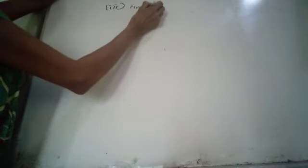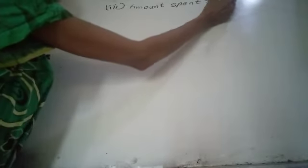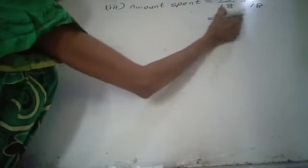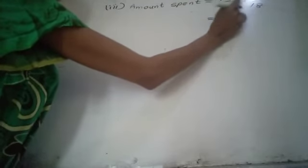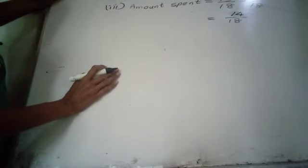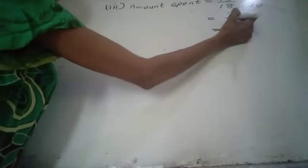The third part asks: find what fraction of the total amount was spent. The total amount spent equals 13 over 18 plus 1 over 18. The denominators are equal, so we add the numerators, giving 14 over 18.